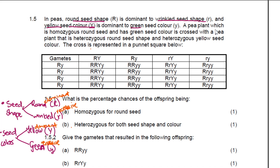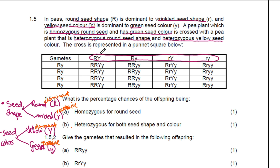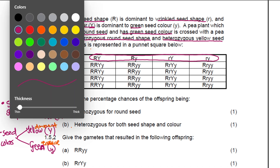Now they are saying here: a pea plant which is homozygous round seed and has green seed color is crossed with a pea plant that is heterozygous round seed shape and heterozygous yellow seed color. The cross is represented by a Punnett square below. Now they've done the cross for you — these are the gametes for the first pea plant and these are the gametes for the second pea plant.